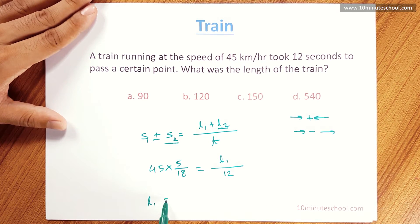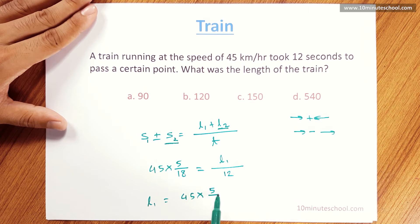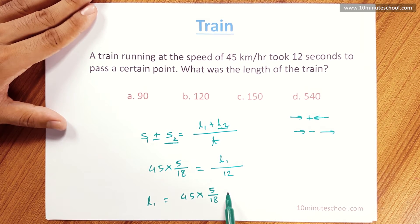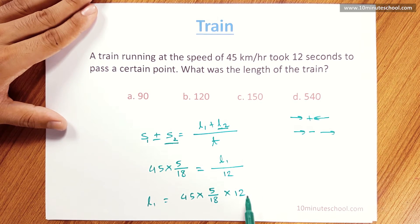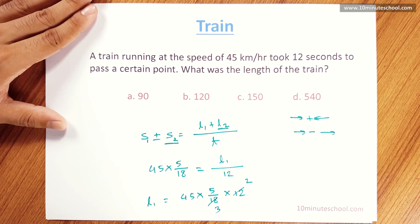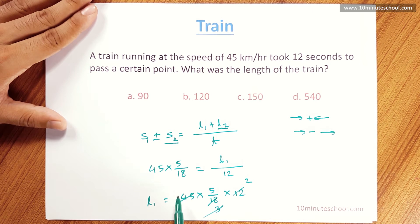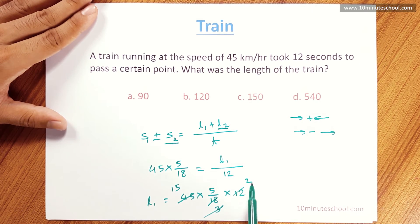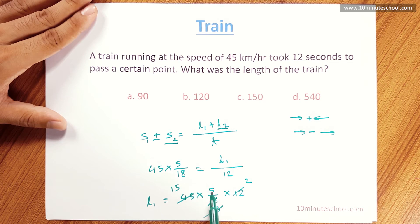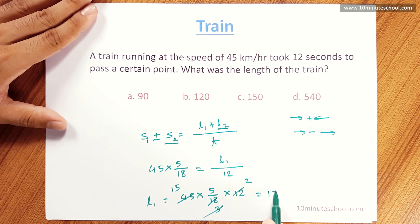So L1 is not L2 zero. So 45 into 5 by 18, we have to multiply by 12. Convert 6 to 3, we get 15. 2 into 5 is 10. 10 into 15 is 150.